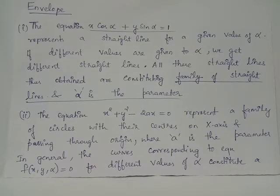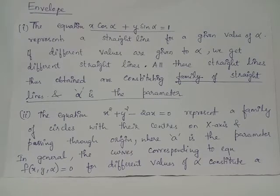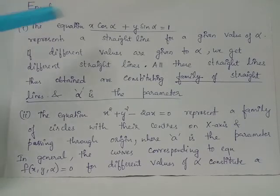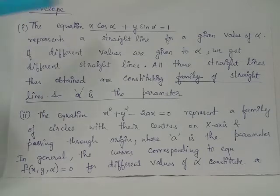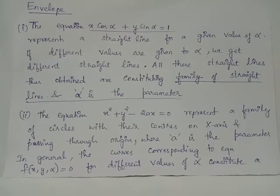In general, a family of curves can be represented by f(x, y, α) = 0 where α is the parameter, or f(x, y, c) = 0 where c is the parameter. These equations involve functions of x, y, and the parameter. For instance, Example 1 can be rewritten as x cos(alpha) + y sin(alpha) − 1 = 0, which is also of the form f(x, y, alpha) = 0.